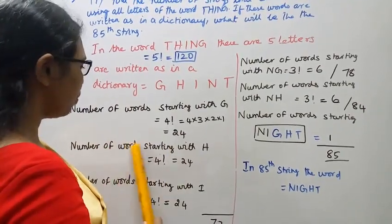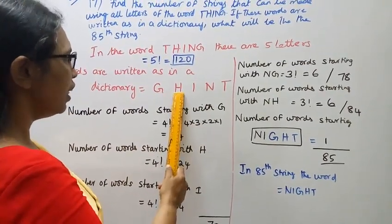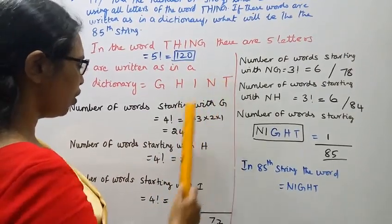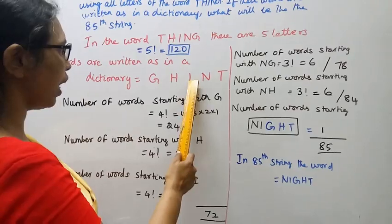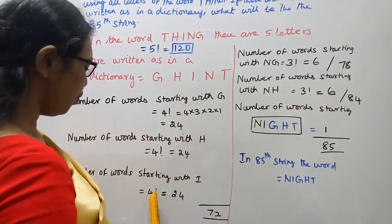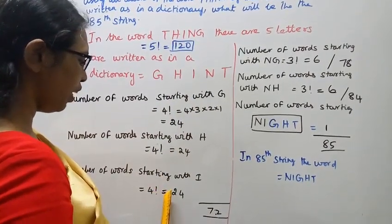Number of words starting with H: 4 factorial equals 24. Number of words starting with I: 4 factorial equals 24.